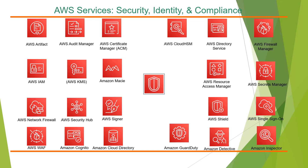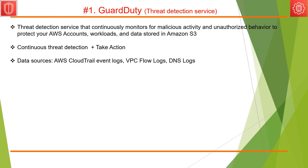Hey there, welcome back. As of August 2021, AWS has 21 security, identity, and compliance services. This lecture covers those 21 security services from a 10,000-foot view. Please stay tuned till the end of this lecture, where I summarize all those 21 services in a single slide. Let's get started.